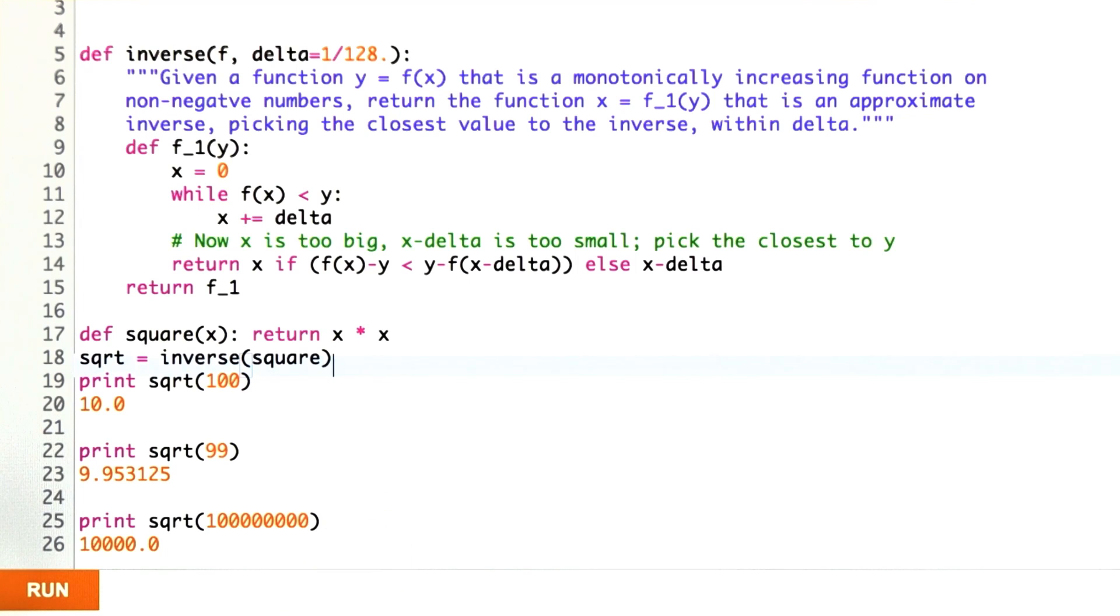That's what I'm going to ask you to do. I want you to modify inverse so that it has a runtime closer to the logarithm of the input to F1 rather than to linear in the input to F1. I'll give you two hints of things to consider. One is binary search.